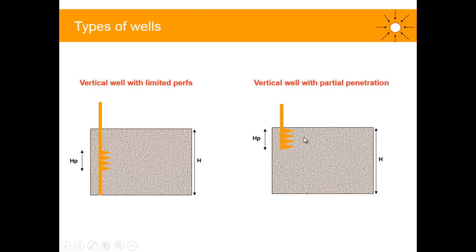We have a limited section in the reservoir producing, of height equal to HP. In this particular example, the limited perforation is placed in the center of the reservoir, but in some scenarios it might be at the top or bottom. You need to pay attention to the distance from the top of the reservoir to the center of the perforation, which is generally called ZW in most well test software.